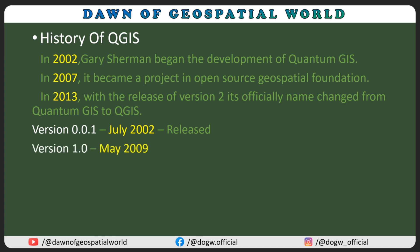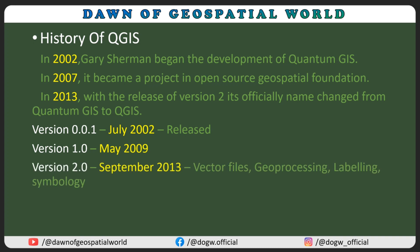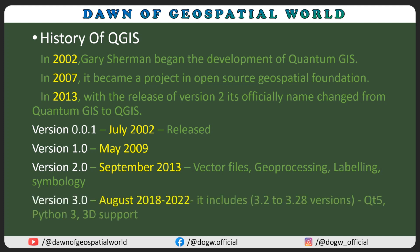Version 1.1 was released in May 2009. Version 2.0 was released in September 2013, with the modification of vector files, geoprocessing, labeling, and symbology. Version 3 has been continuing to the present day, released from August 2018 through 2022, and includes versions 3.2 to 3.28.